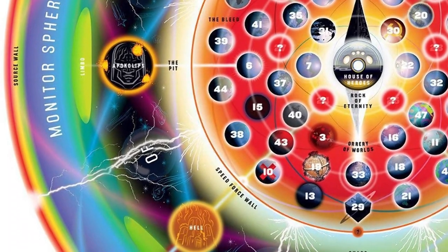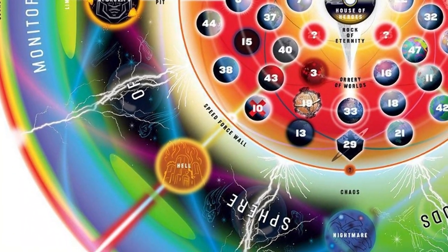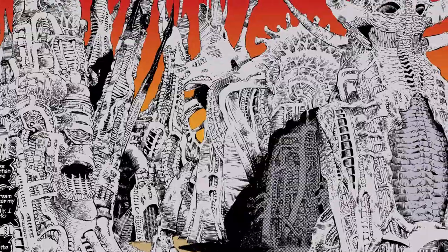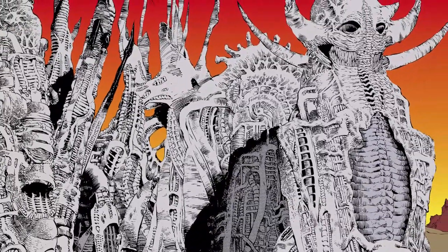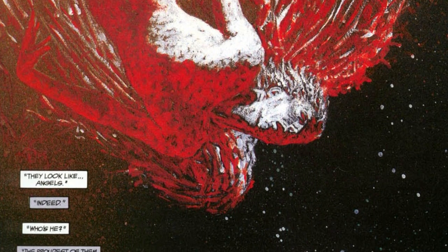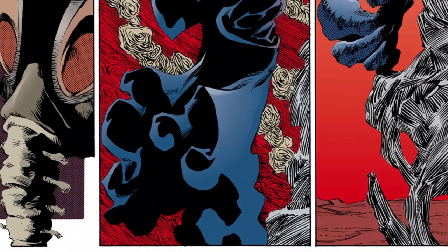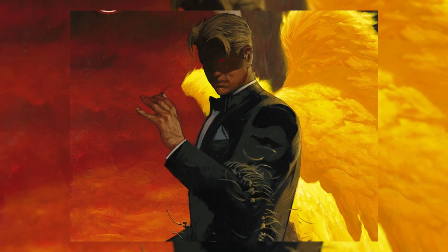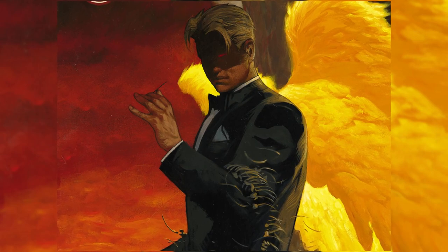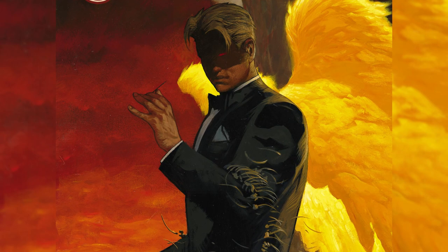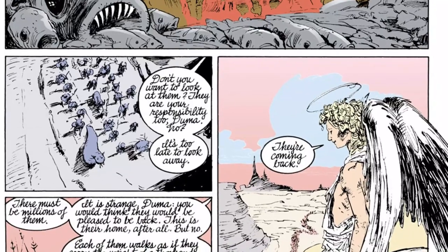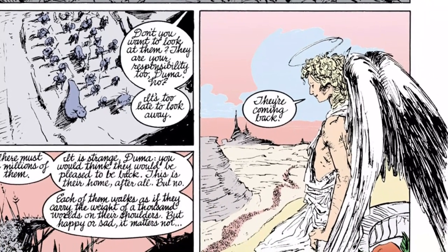Adjacent to Apokolips lies the realm of Hell, existing in opposition to Heaven on the other side of the multiverse. Hell serves as the abode of damned souls, accessible primarily to demons and higher beings including archangels. This fiery realm became the exile for Lucifer Morningstar following his failed rebellion in Heaven. Lucifer ruled over Hell for approximately 10 billion years, but growing weary, he relinquished his duties and retired on Earth, leading to a temporary closure of Hell until new rulers — angels Duma and Remiel — were appointed by God.